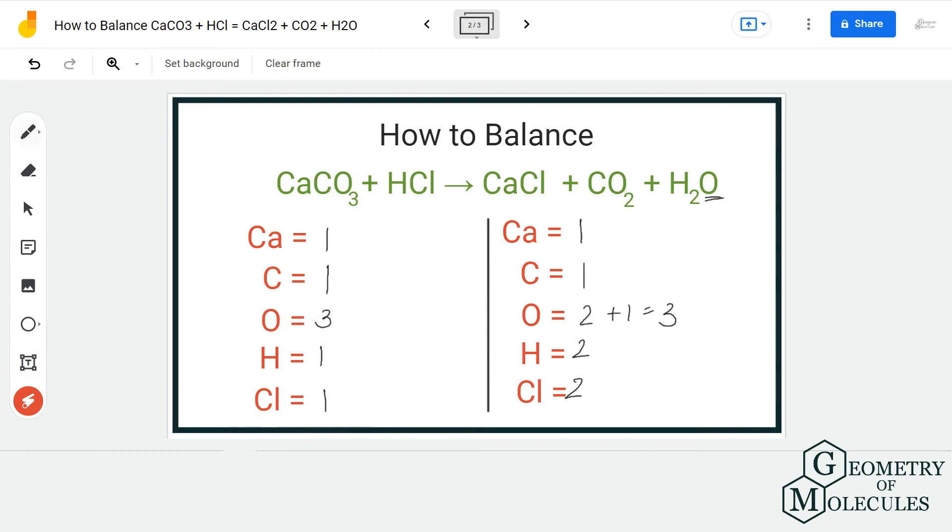To fix it, I'm just going to add a coefficient 2 on the reactant side, and doing that we will have the same number of hydrogen and chlorine atoms on the reactant side as well. Now if you check, we have the same number of atoms on both sides and hence this is the balanced equation.